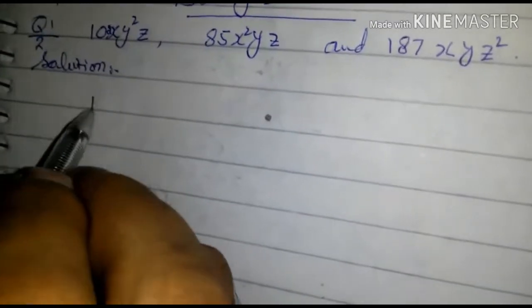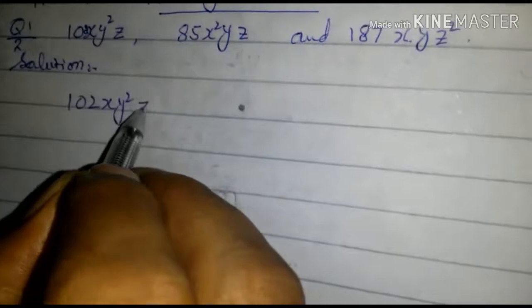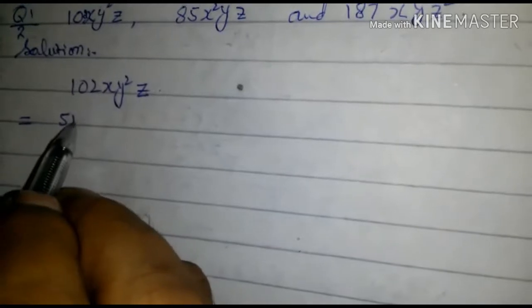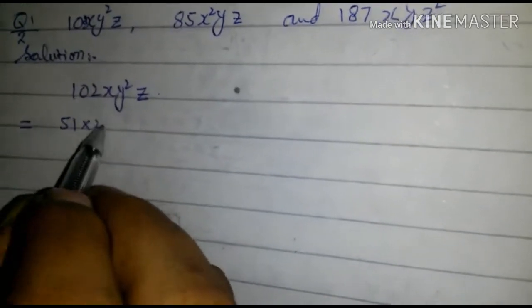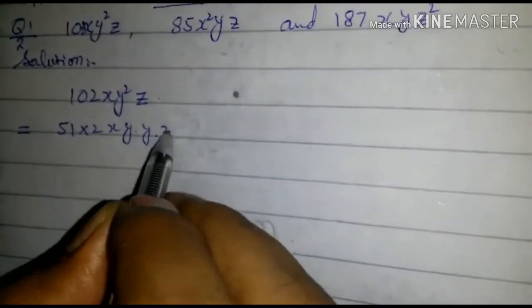First, 102xy²z equals 51 into 2 x y into y into z.